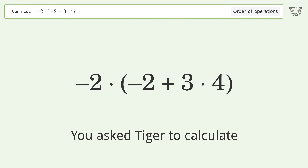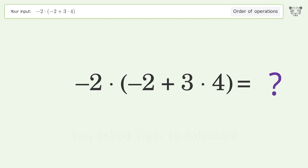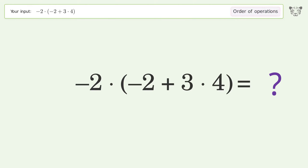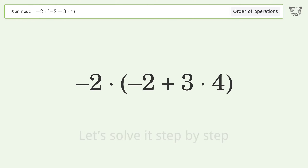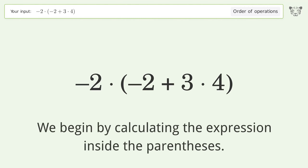You asked Tiger to calculate. This deals with the order of operations. The final result is negative 20. Let's solve it step by step.